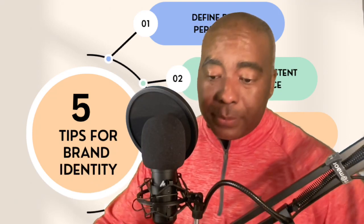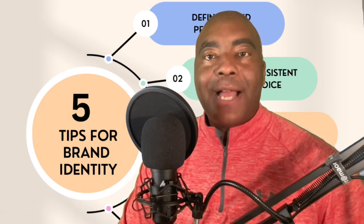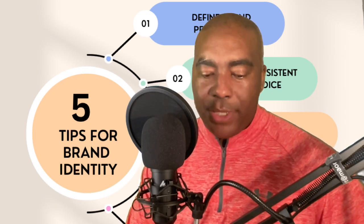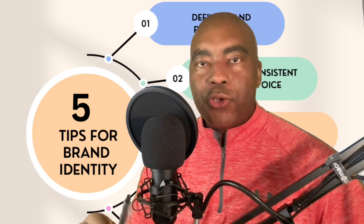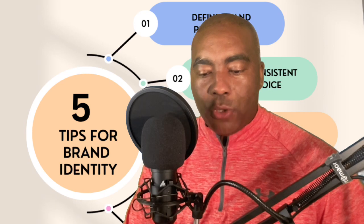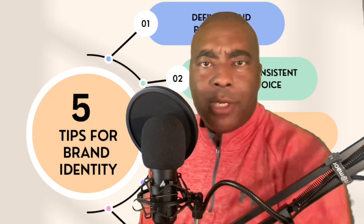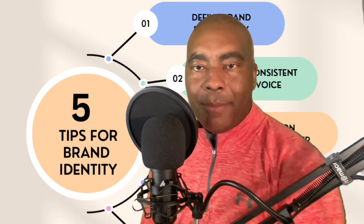The five tips for brand identity: Number one, define your brand personality. Number two, create a consistent brand voice. Number three, who's your avatar? Take some time to find who your avatar is, what feelings they're having, and how your product or service can become the solution to their problem. Number four, your visual identity — your logo. You can tweak it and make it a little better. Number five, be authentic, be yourself.